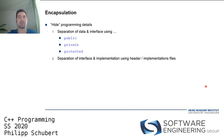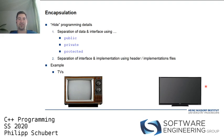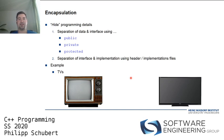C++ also offers encapsulation at a higher level: separating interface and implementation using header and implementation files. Consider two TVs — they may have completely different internal implementations, but the interface is the same: turn on/off, switch channels, adjust volume. You want to hide how things are implemented internally; the user only needs to know the interface.